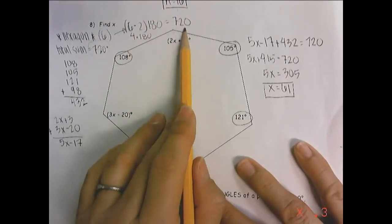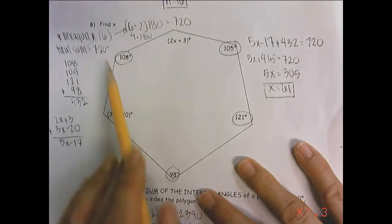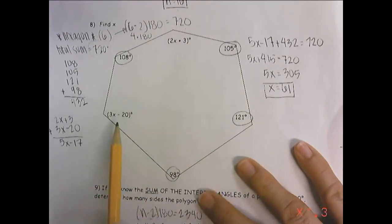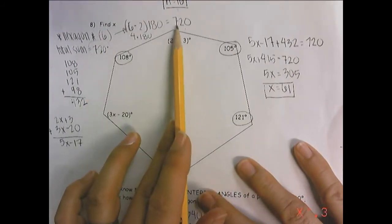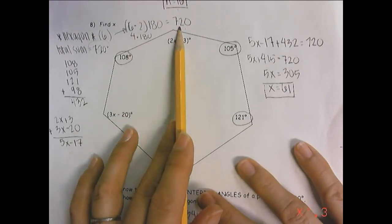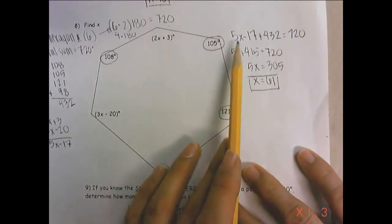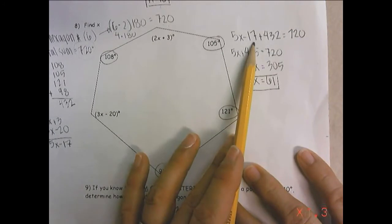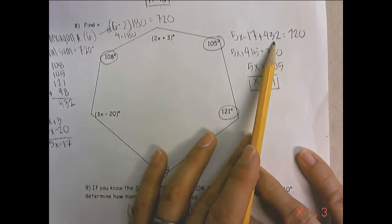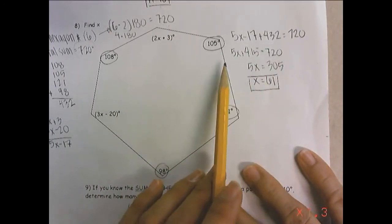Next, I added up all of these angles, and then I set them equal to 720. So, I did 5x minus 17 plus 432 equals 720.